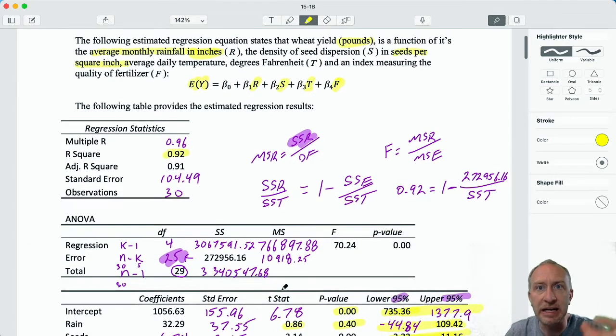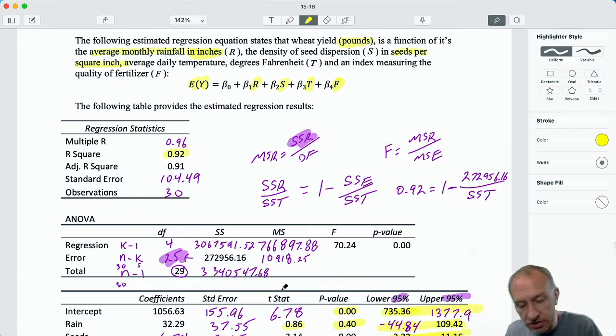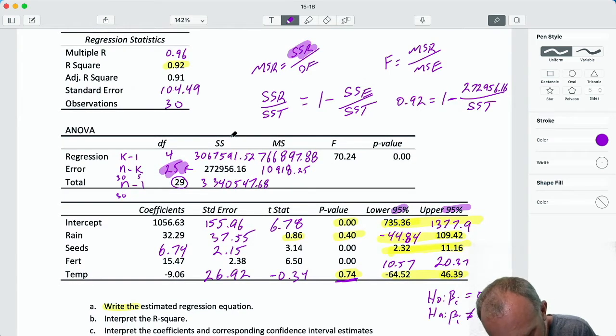So here we're looking at, again, we've got this estimated regression equation that shows wheat yield as a function of rainfall, seed dispersion, temperature and fertilizer quality. So after going through all of this, we have our estimated equation that gives us these coefficients.